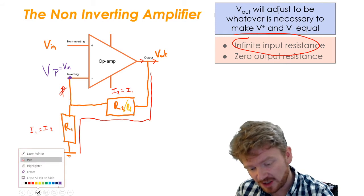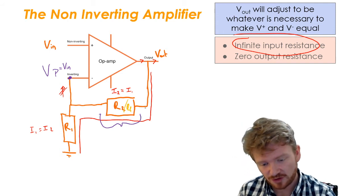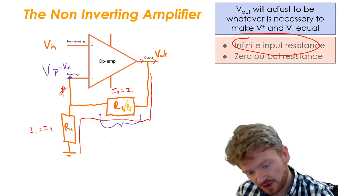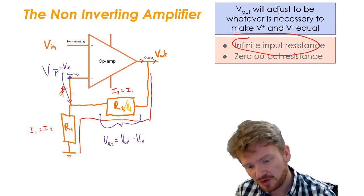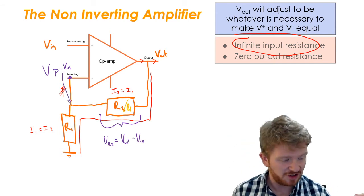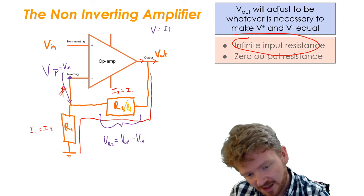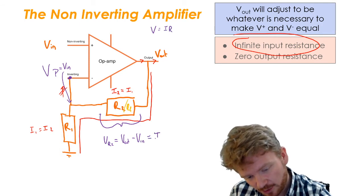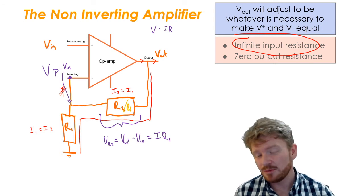So we're going to use exactly the same tricks as we did in the previous lesson, and we're going to think about the potential drop across R2 to start with. Now, across R2, I can say the potential drop will be Vout minus Vin, because I've already said that the potential here must be Vin. The op-amp will do whatever is necessary in order to make that happen. And using Ohm's law, which is V is IR, I can say that that potential drop is equal to the current multiplied by R2. I'm just going to use I for the current, because the current in R1 and the current in R2 is the same, so we're just going to call it I.